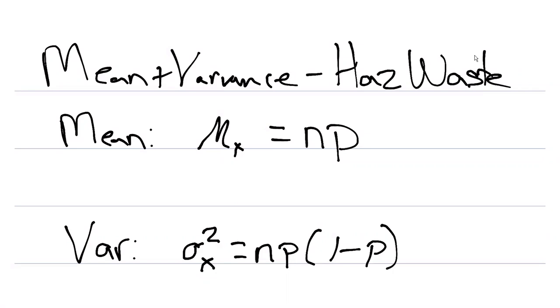That is, n is the number of trials, and p is the proportion of success from those numbers of trials.